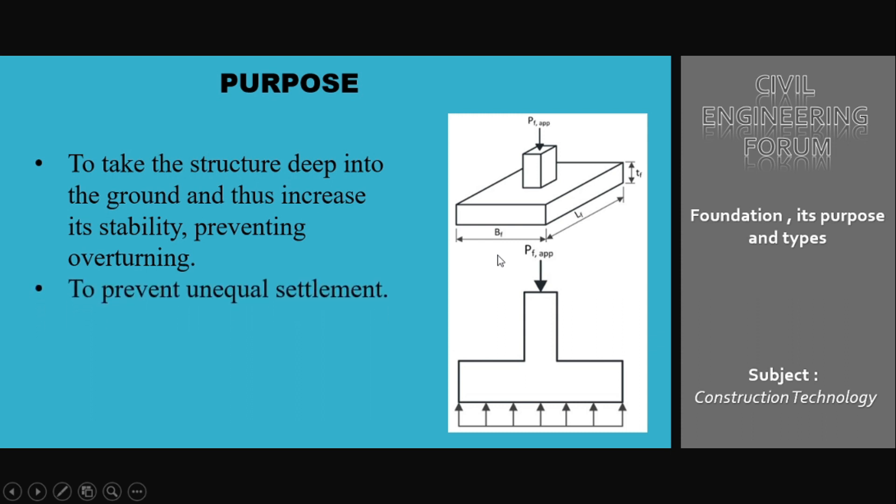Going to the second point, its purpose is to prevent unequal settlement. Sometimes it's possible that our structure has been settled on one side compared to that on the other side. This may be due to some fault in the foundation or a drastic reduction in the soil bearing capacity. If we provide firm and safe foundation, we can prevent unequal settlement.